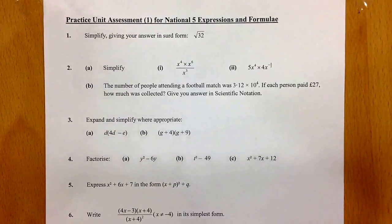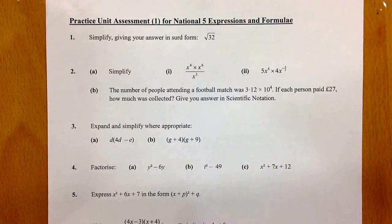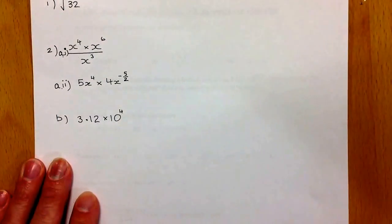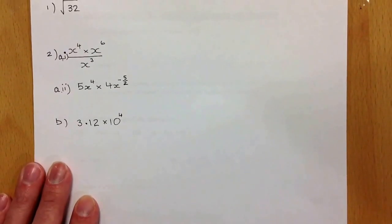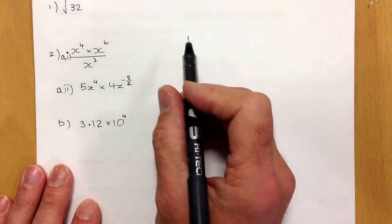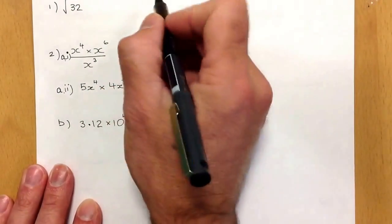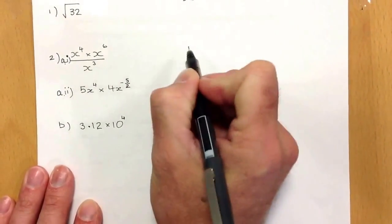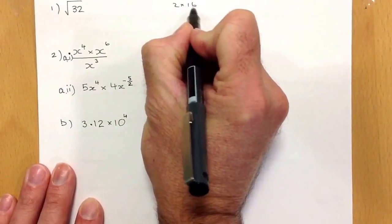First question: simplify giving your answer in surd form. I'm going to start with root 32. With root 32, I'm going to consider the factors of 32, the numbers that multiply together to make 32. So I'll consider 1 times 32, 2 times 16 would give me 32.